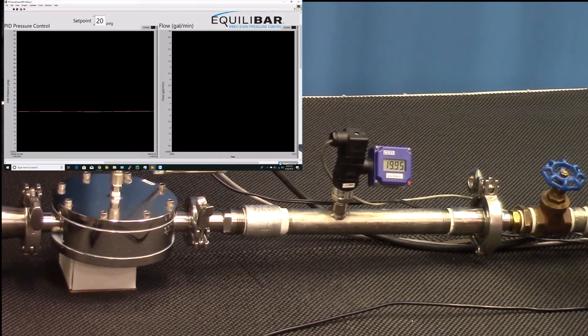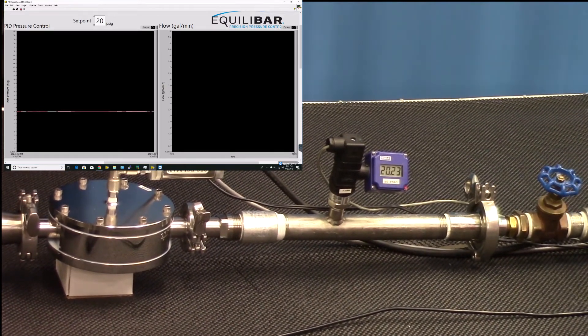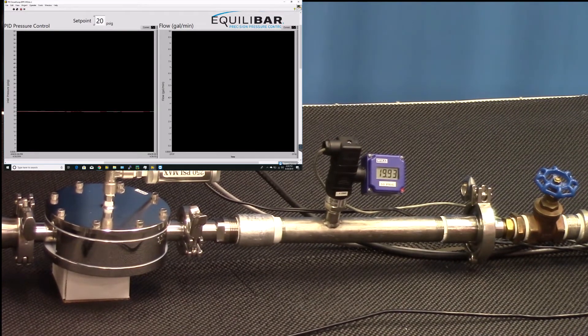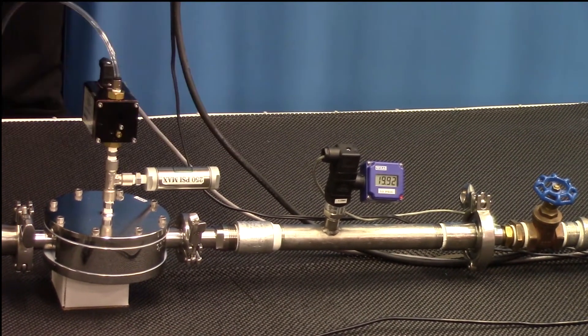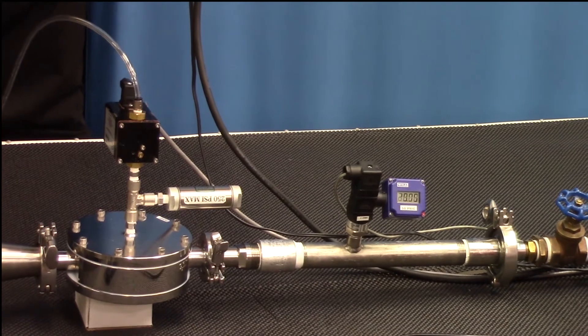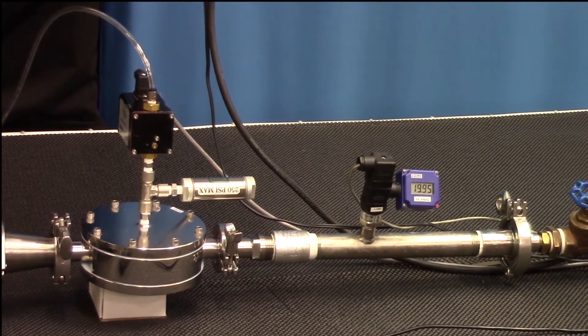We'll slowly ramp this up again, and now we're almost to 10 gallons per minute. So now we've maxed out the capacity of the system, and we see the valve has stably responded and is reading almost 20.00 psi on the inlet pressure gauge. Let's go to an even higher flow capacity and see the resolution there.